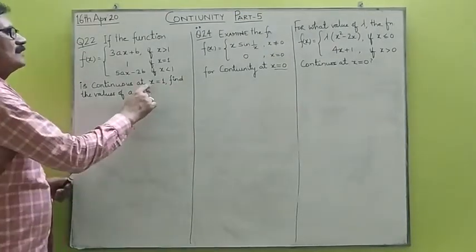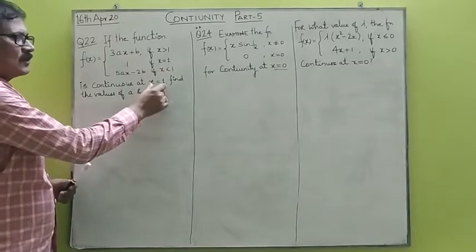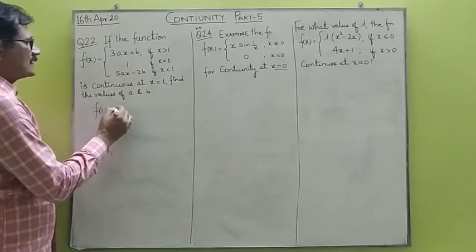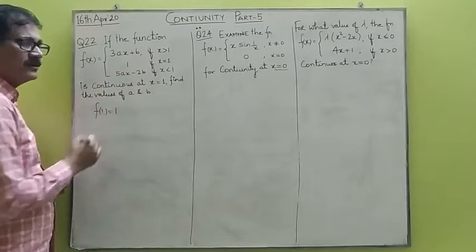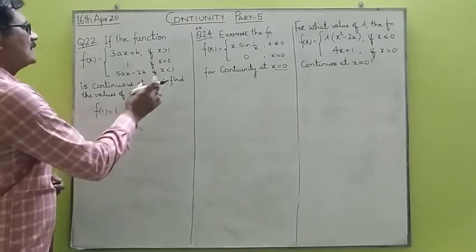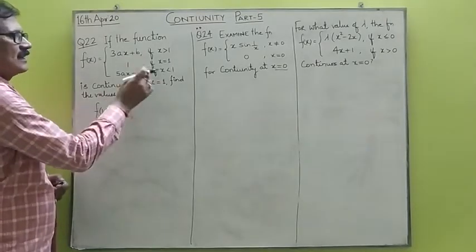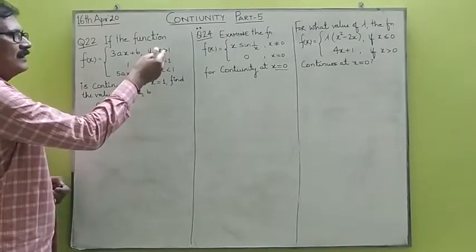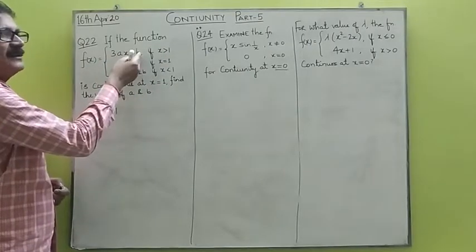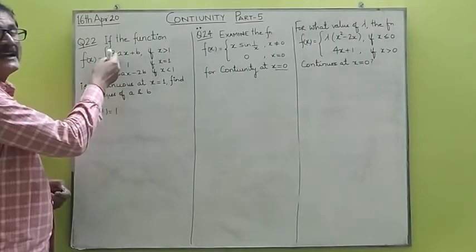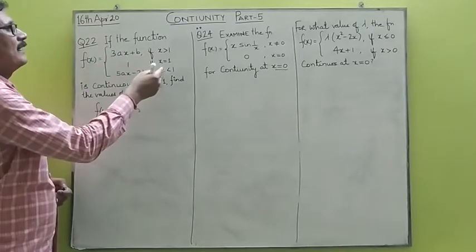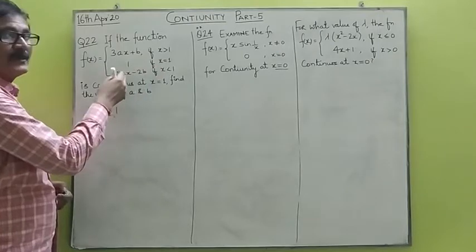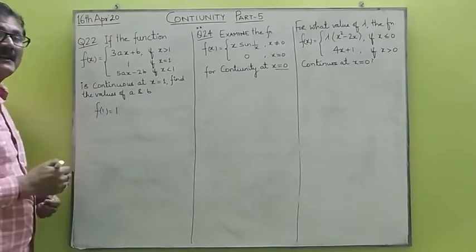Since the function is continuous at x equals to 1, let's find out the value of the function at 1, which is given as equals to 1. Now since the function has different definitions about the point x equals to 1 — to the right side of 1 it is defined by 3ax plus b, which will be used in finding the right hand limit, while for the left side of 1 it is defined by 5ax minus 2b, so it will be used in finding the left hand limit.